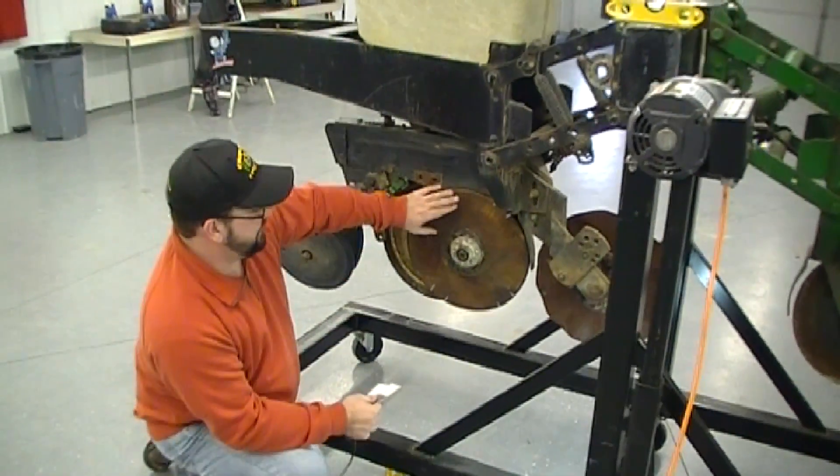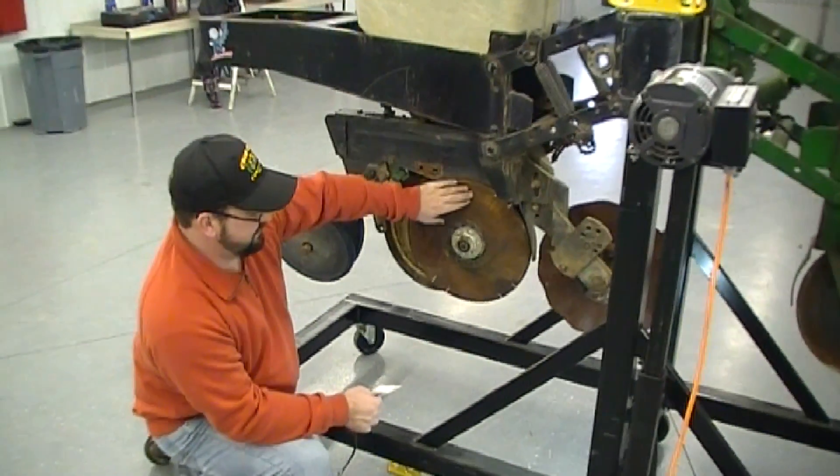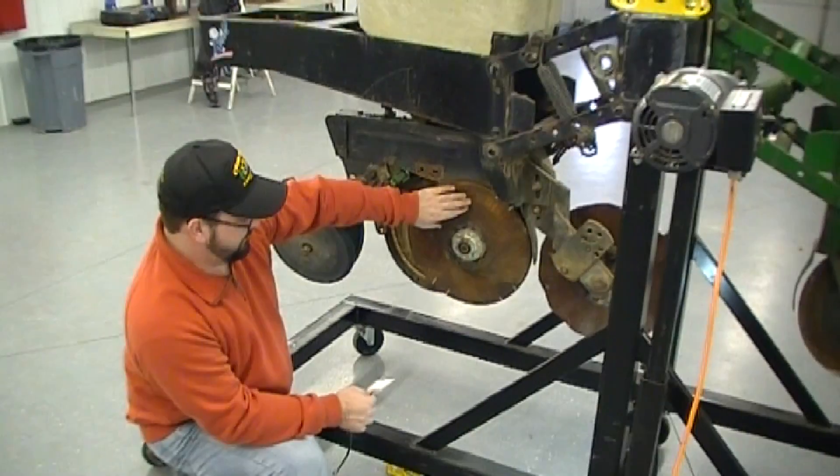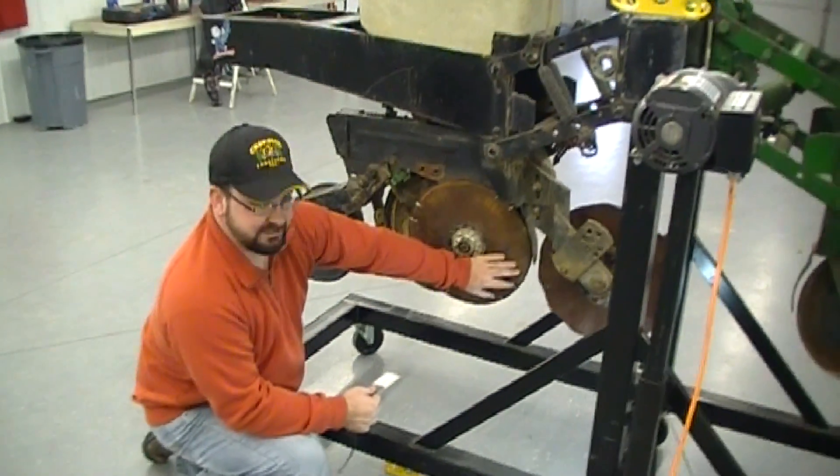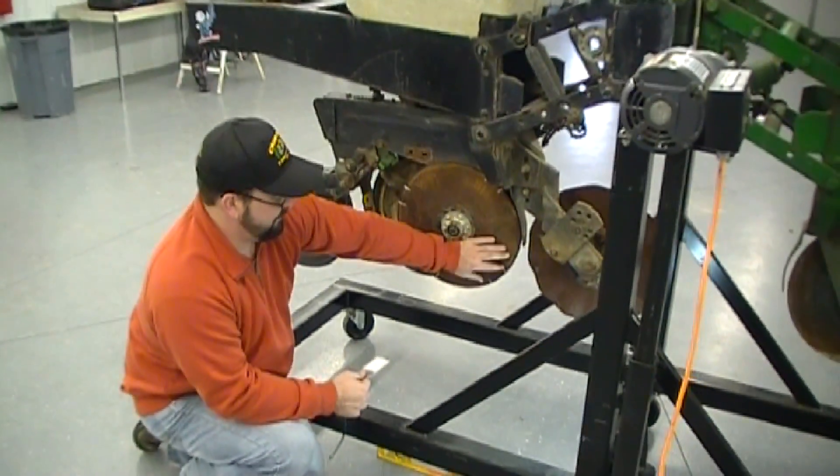Typically how we would set this, in this case on a 2600 series Kinsey or a Deer type planter, is we're going to aim for about two inches to two and a quarter inches of contact up here at the front.